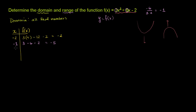When x is equal to 0, the first two terms are 0, so you're just left with negative 2. And you can see the symmetry here: going 1 above the vertex x value gives f of x equal to negative 2, and 1 below the vertex x value also gives negative 2. When x is equal to 1, you have 3 times 1 plus 6 times 1 minus 2, which is 9 minus 2, equal to 7.